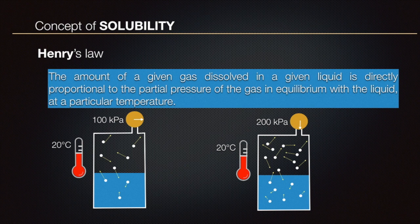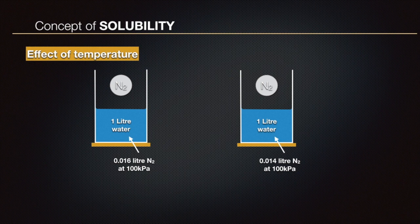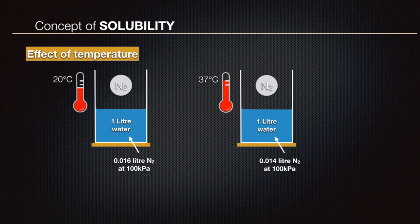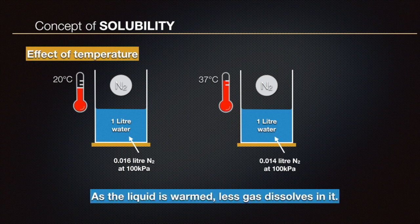Note that the temperature must be kept constant for this to apply — this principle is known as Henry's law. Now, what happens if the temperature is altered? Let's take a cylinder with one liter of water exposed to an atmosphere of nitrogen. The left cylinder is at room temperature, 20 degrees Celsius, and the right one at body temperature, 37 degrees Celsius. The pressure of nitrogen in both cases is 100 kilopascals, but the volume of nitrogen dissolved in one liter of water at room temperature is 16 ml, whereas at body temperature it is only 14 ml.